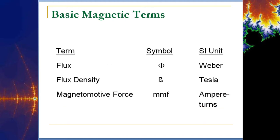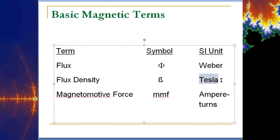Some basic units and terms: when we talk about flux, that's measured in the Weber. Flux density is measured in Tesla. And the magnetomotive force, sometimes written as MMF, is measured in amp-turns.